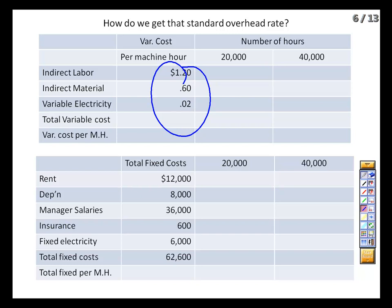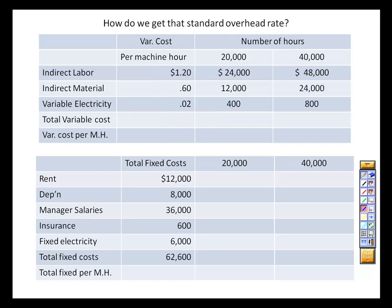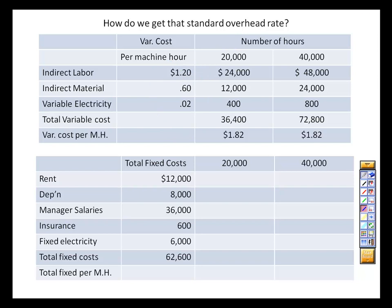Our next step is to determine how much we expect to be incurring these costs — that is, how much machine time will we be using, because the more machine time we use, the more we're spending on each of these items. There are two possible production amounts — running one shift versus two shifts a day. If we run the machines 20,000 hours a month, we'll incur $24,000 of cost; if we run a second shift and do 40,000 hours, we're looking at $48,000 in costs. The same holds for indirect materials and electricity costs.